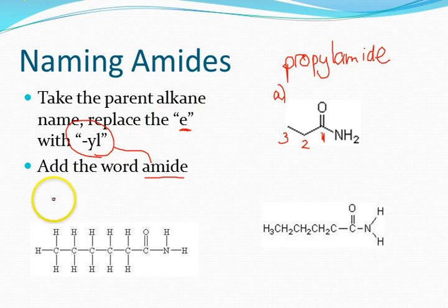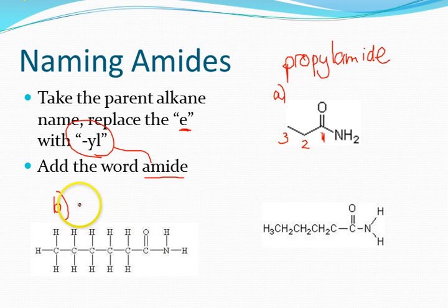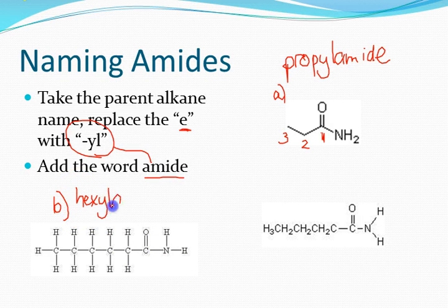Let's look at this one, molecule B. How many carbons? I've got them all drawn out here. There are six carbons. So what would that be? Hexanamide.